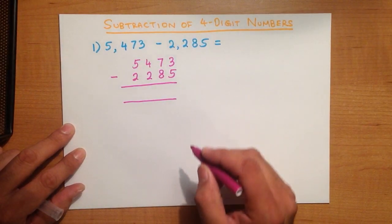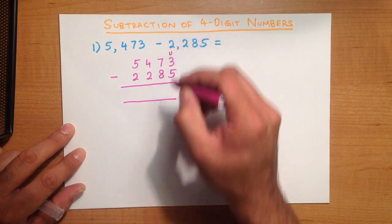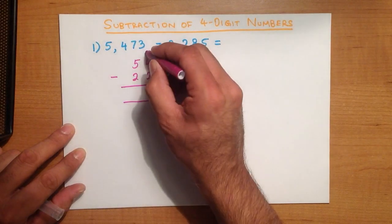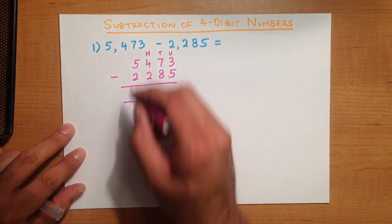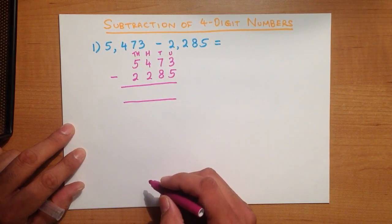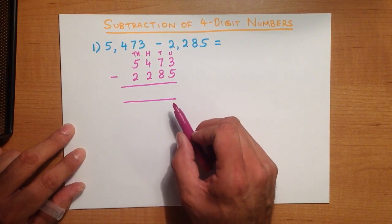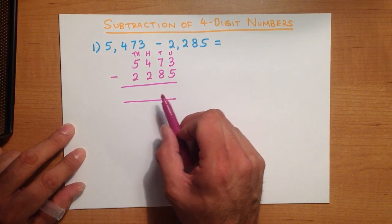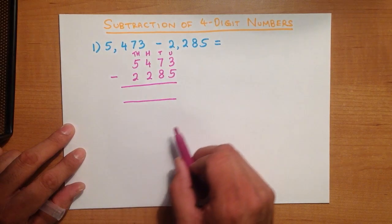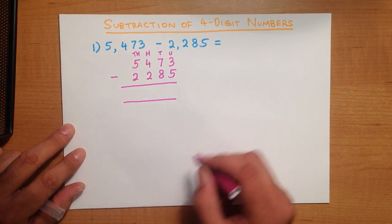Now, we can label the columns — we don't have to, but let's label them in the first instance. We've got units, tens, hundreds, and thousands. With the vertical format, what we do is we subtract column by column by column, and we always start with the column on the right-hand side.